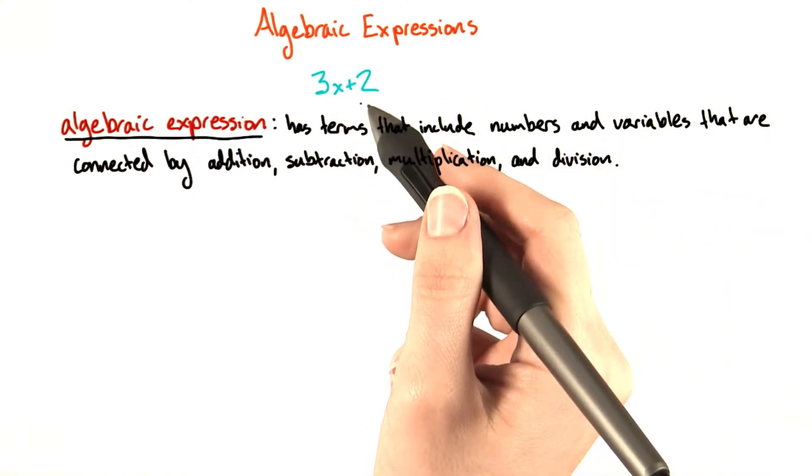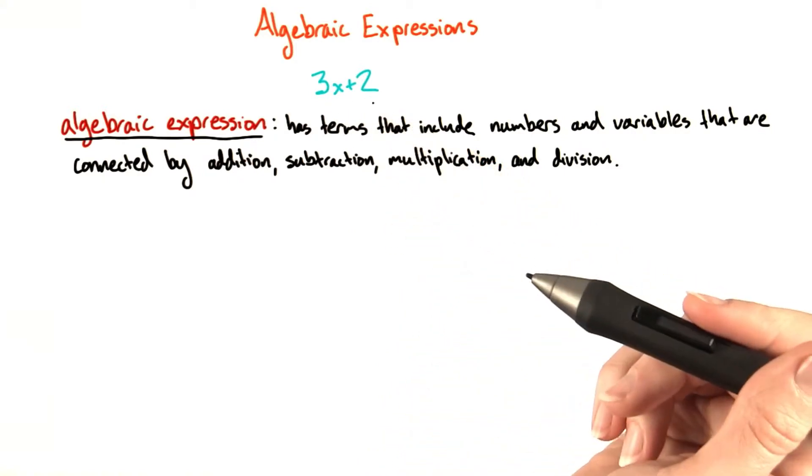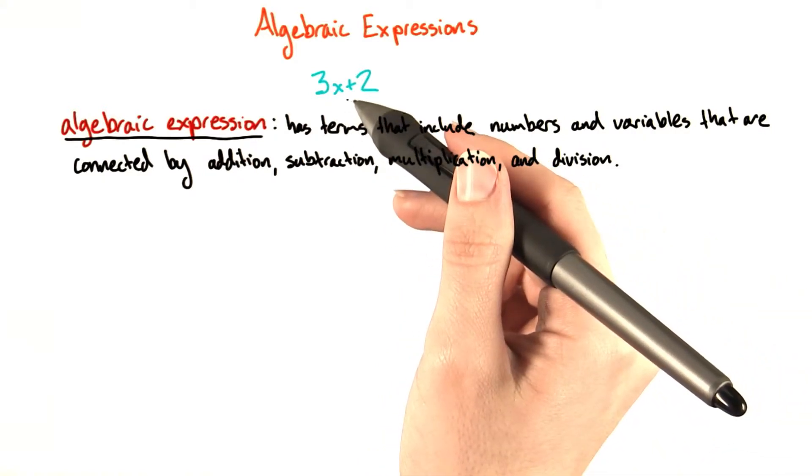In 3x plus 2, 3x is a term and 2 is a term. They're separated by the operation of addition.